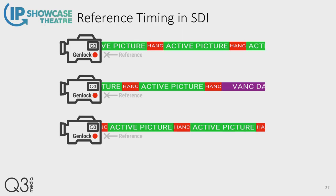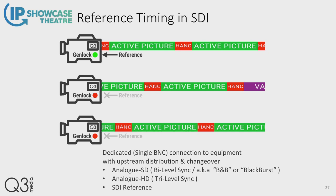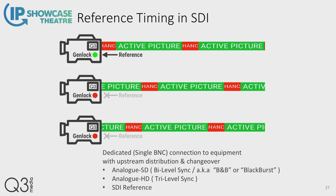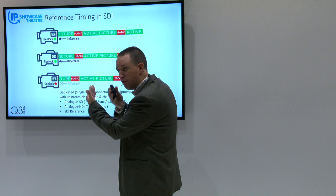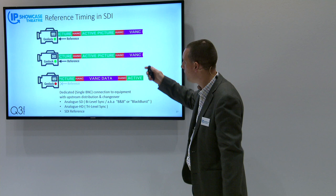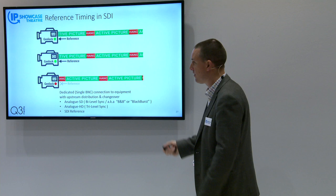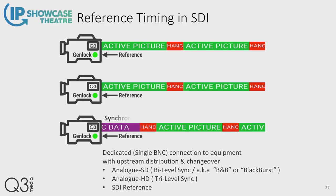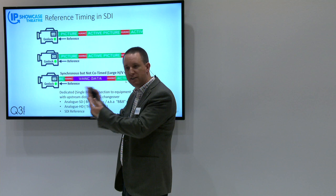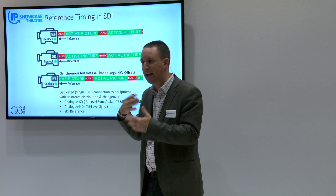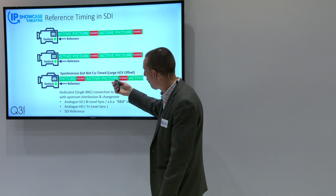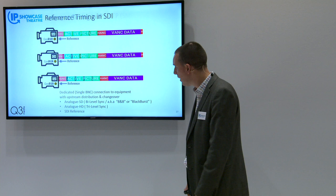Referencing is still very important in IP networks. We used to solve the problem of making multiple cameras synchronize to a vision mixer by giving them a reference signal — a Genlock signal — either analog black and burst or tri-level sync. By referencing cameras, it guarantees they run at the same frequency. Without a reference, two cameras will never have the exact same concept of what 25 frames per second means, just like two watches never tell exactly the same time. Even with a reference signal plugged in, things wouldn't necessarily be co-timed, so you'd often have to adjust the HV offset to make sure signals were synchronous — which required a waveform monitor to check.